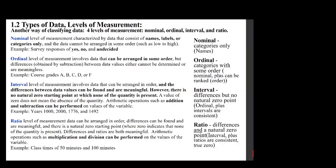And the last one, ratio level of measurement. Level of measurement data can be arranged in order. Differences can be found and are meaningful, and there is a natural zero starting point where zero indicates that none of the quantity is present. Differences and ratios are both meaningful. Arithmetic operations such as multiplication and division can be performed on the values of the variable. Example: class times of 50 minutes and 100 minutes.